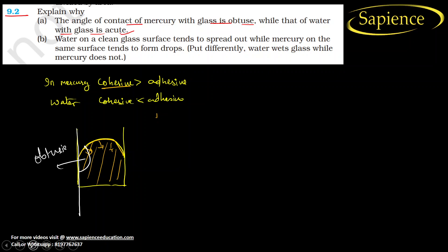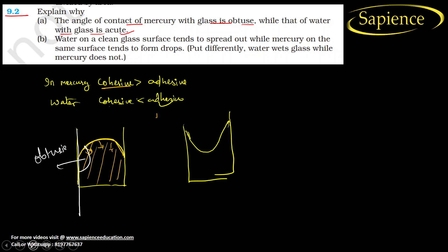In water, the adhesive force is greater than the cohesive force. Water tends to attract different-type molecules like glass, so it spreads along the glass surface and rises. This forms a concave meniscus — depressed in the center. The angle between the top surface and the contact surface is therefore acute.